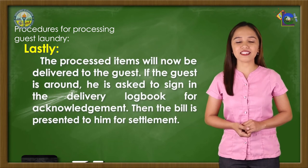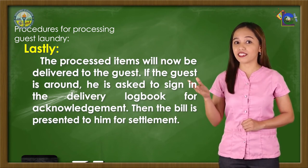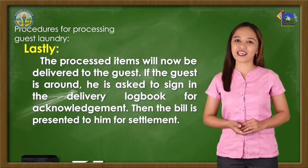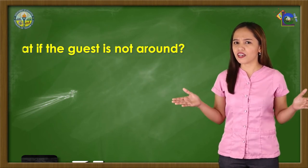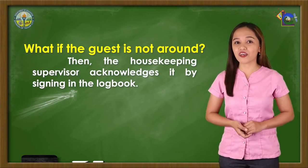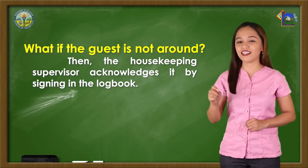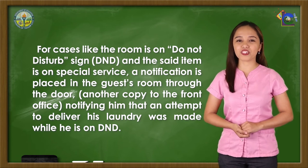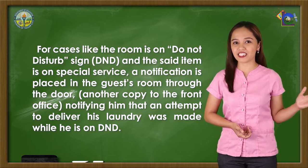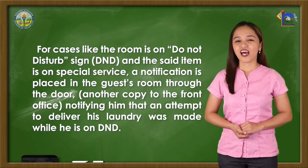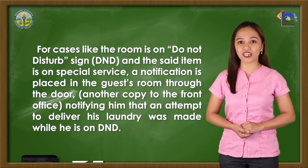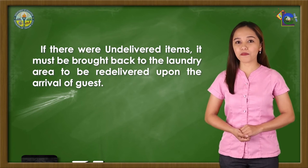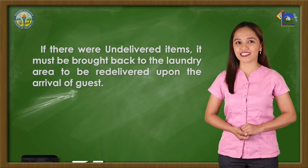Lastly, the processed items are delivered to the guest. If the guest is around, he is asked to sign the delivery log book for acknowledgement, and the bill is presented to him for settlement. If the guest is not around, the housekeeping supervisor acknowledges by signing the log book. For cases where the room is on a Do Not Disturb sign and the item is on special service, a notification is placed on the guest room door and another copy sent to the front office. Undelivered items are brought back to the laundry area to be re-delivered upon the guest's arrival.